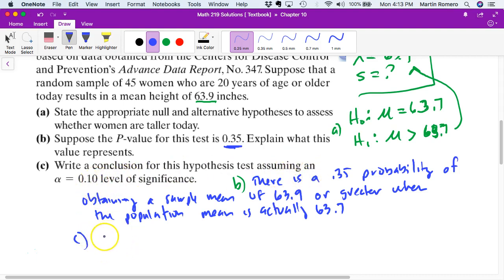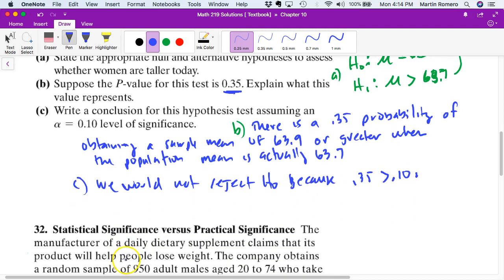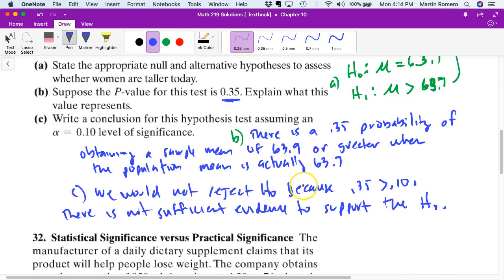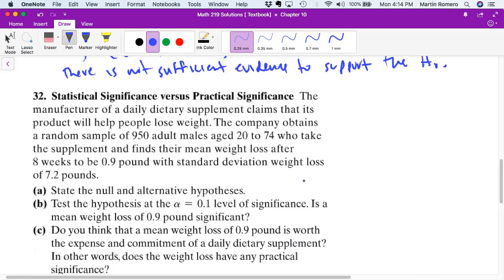Write a conclusion for this hypothesis test, assuming alpha is 0.10. In this case, we would not reject the null hypothesis because 0.35 is greater than 0.10. And so the conclusion we would just say is there is not sufficient evidence to support the alternative hypothesis. We don't have enough evidence to say that girls are getting taller. It's not there.